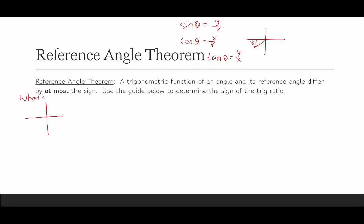Starting with quadrant 1: x is positive and y is positive. Since r is always positive, sine is positive (positive over positive), cosine is positive, and tangent is positive. So all three trig functions — sine, cosine, and tangent — are positive in quadrant 1.